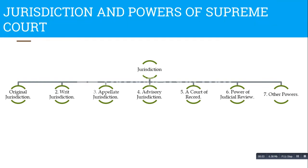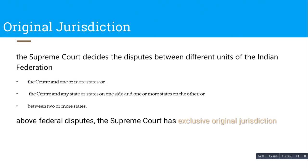First is original jurisdiction. Original jurisdiction means cases that are originally and only handled by the Supreme Court — you can directly reach the Supreme Court for these matters. When the Supreme Court decides disputes between different units of the Indian Federation, since we have a federal type of government, if the center and a state or center and multiple states have a dispute, they cannot go to the High Court — they can only go to the Supreme Court. These federal disputes fall under the exclusive original jurisdiction of the Supreme Court.